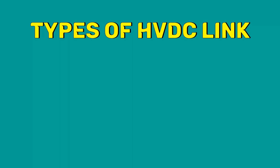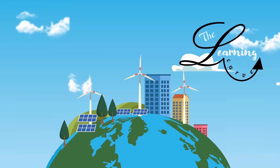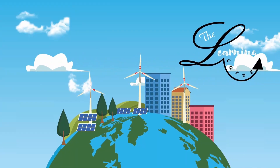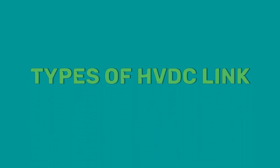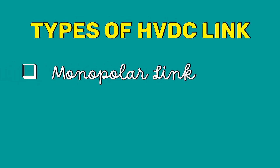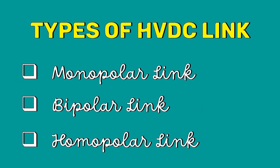In today's video we are going to see the types of HVDC links. Hi, I am Benila and you are watching the Learning Curve. The three types of HVDC links are monopolar link, bipolar link, and homopolar link.